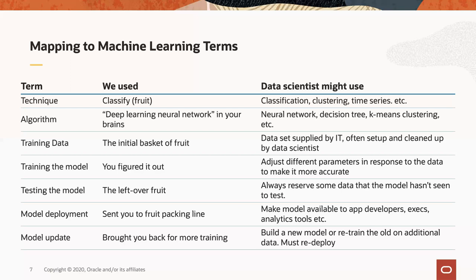Finally, model updating: when I added a new fruit to my empire, I brought you back for more training to update your model. This is a process that happens all the time with machine learning models. The world changes, data changes, and so very often you need to bring models back, monitor them, understand how they're performing, and retrain them or build a new model in order to take account of new circumstances.